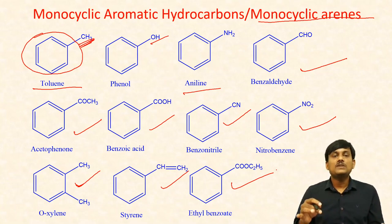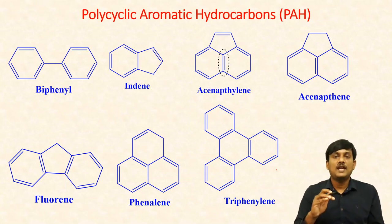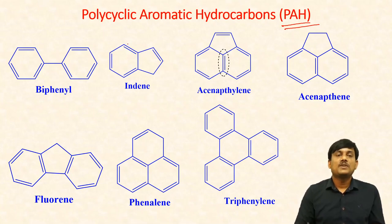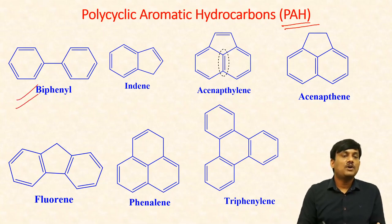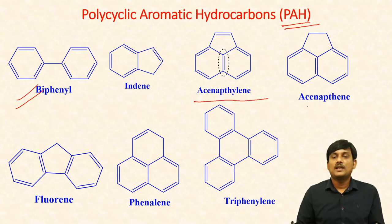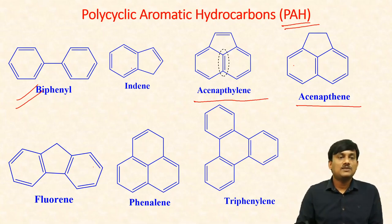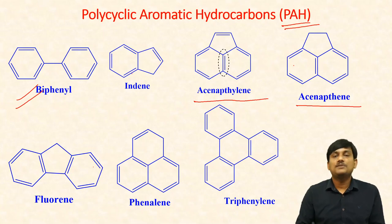These are aromatic hydrocarbons which contain only one benzene ring. We have polycyclic aromatic hydrocarbons — these are called as PAH. Polycyclic aromatic hydrocarbons contain at least two benzene rings. Biphenyl is a polycyclic hydrocarbon. Indane is not polycyclic, it's monocyclic. And acenaphthylene, acenaphthene — it has two benzene rings — and fluorene, phenanthrene, and triphenylene, which has four benzene rings. The benzene rings may be attached with a single bond or sometimes fused.